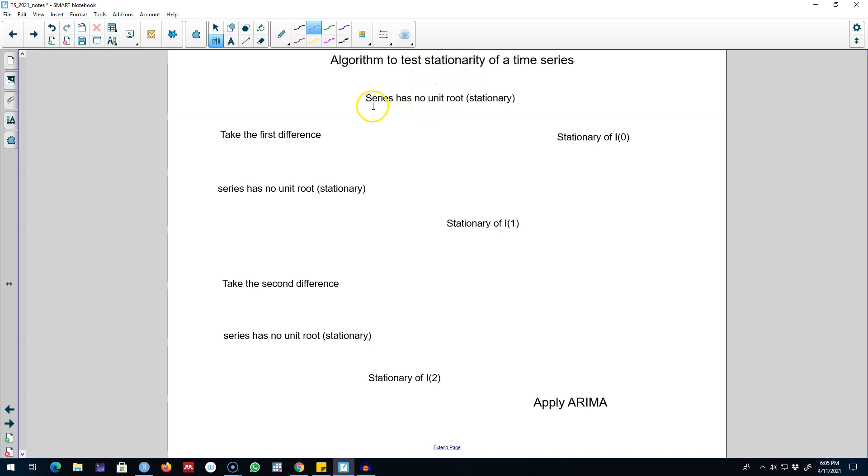So the first thing I want to do is we are going to test whether a time series is stationary or not. Obviously we can apply either the KPSS test or the augmented Dickey-Fuller test to test for the presence or absence of the unit root in a time series. If there is no unit root in the time series, then this series is stationary.